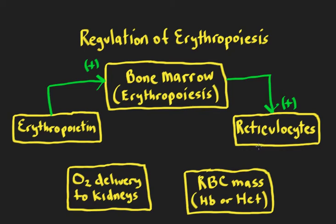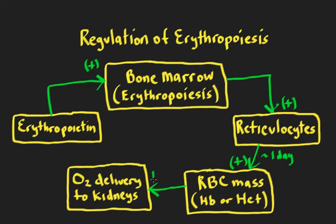This maturation process normally takes about 24 hours. There's going to be a direct relationship between reticulocytes and the red blood cell mass, taking about a day or so to become fully mature. The red blood cell mass can be measured by either looking at hemoglobin (Hb) or hematocrit (HCT). Red blood cells carry hemoglobin, hemoglobin binds oxygen, so there's a direct relationship between the red blood cell mass and oxygen delivery to the tissues, including the kidneys. The arterial partial pressure of oxygen also plays an important role in loading oxygen onto hemoglobin and saturating it.